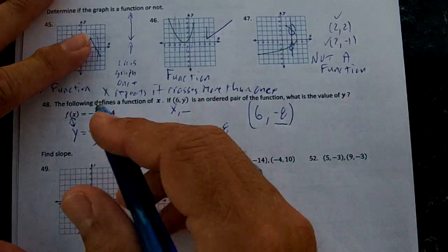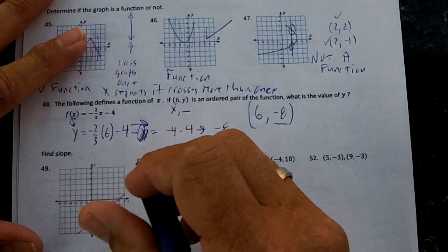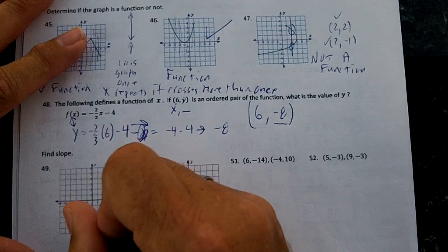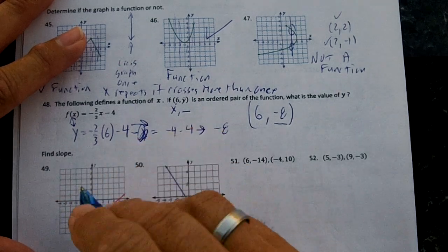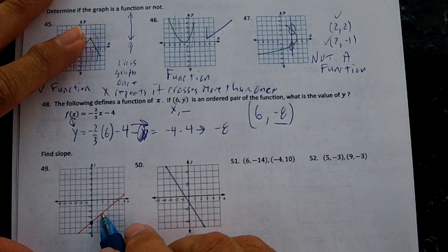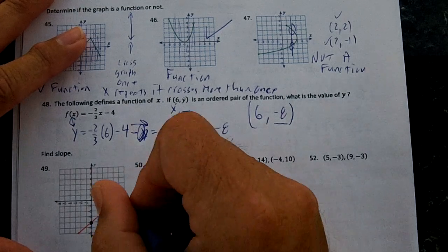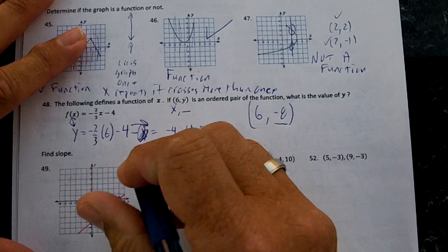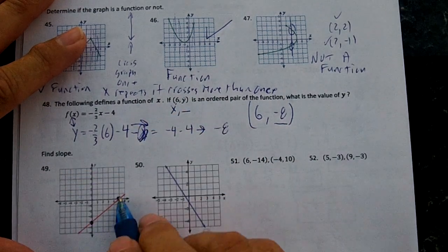And lastly, find the slope. What you want to do on these problems is put dots on the tick marks. So we have a dot here. And where do we go up next to get the next dot? Right here.